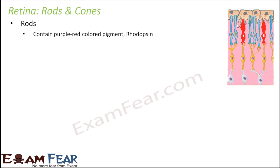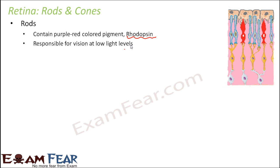Rods contain a purple-colored pigment called rhodopsin, and they are responsible for vision at low light levels. When there is dim light, we are still able to see — we don't go blind. For example, when the power goes off and the entire house becomes dark, initially you are not able to see anything.